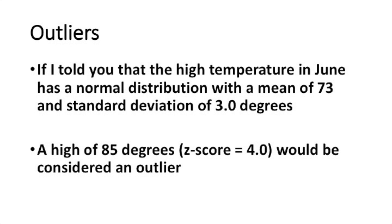For example, say the high temperature in June has a normal distribution with a mean of 73 degrees and a standard deviation of 3 degrees. A high of 85 degrees, which would be a z-score of 4, would be considered an outlier — it falls outside the pattern of the distribution. Likewise, a high of only 63 degrees, which corresponds with a z-score of minus 3.33, would also fall outside the pattern of this distribution.